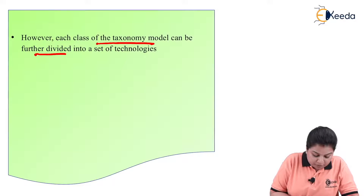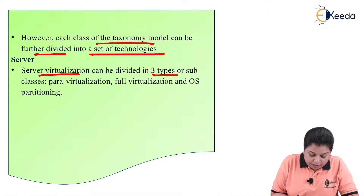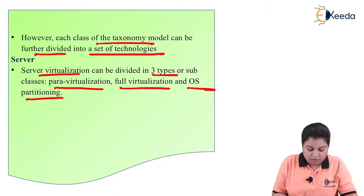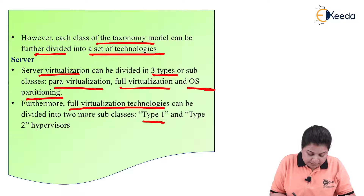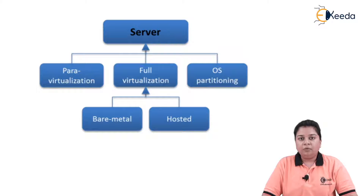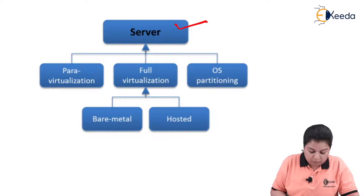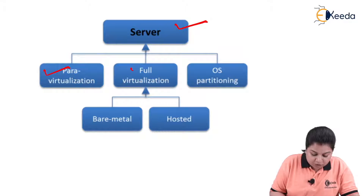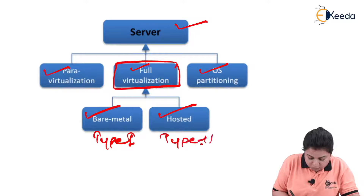Each class of the taxonomy can be further divided into a set of technologies. Server virtualization can be divided into three types or subclasses: first is para-virtualization, then full virtualization, and operating system partitioning. Furthermore, full virtualization technologies can be divided into two more subclasses — Type 1 and Type 2 hypervisors, also known as bare metal and hosted hypervisors.